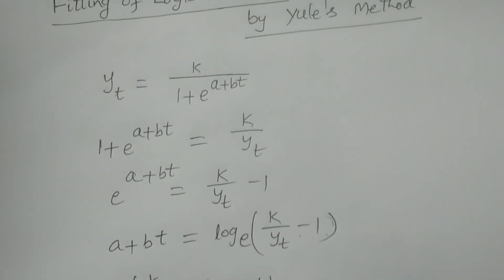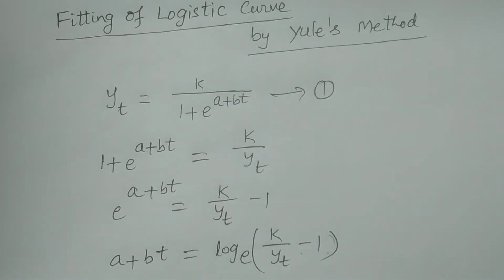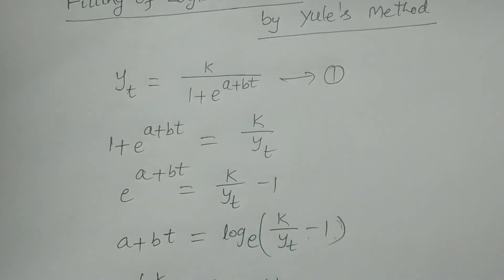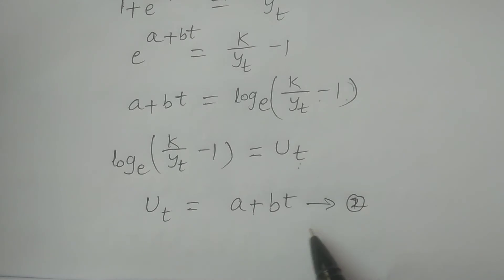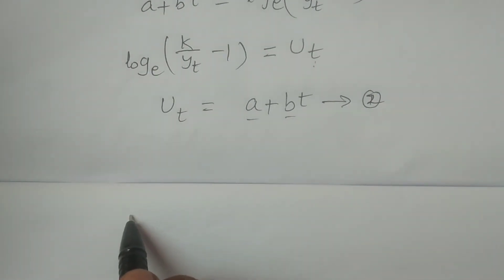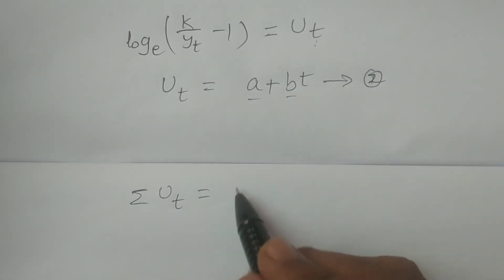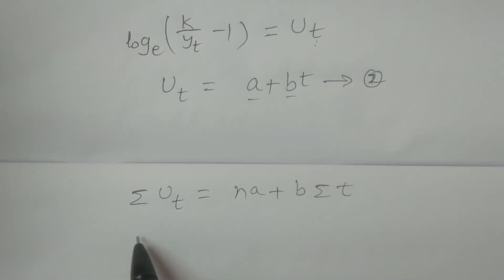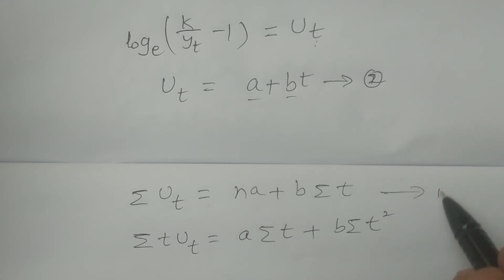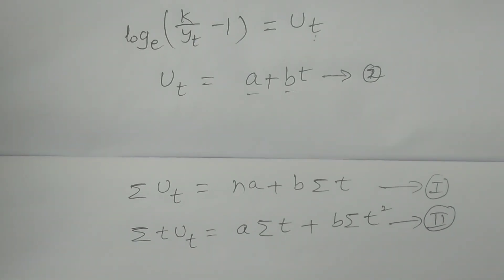The first equation is the logistic curve: Y_t = k divided by 1 plus e to the power (a + bt). The second result is u_t = a + bt, which is a straight line. By the principle of least squares, we can obtain the parameters a and b using the normal equations. The two normal equations are: summation of u_t equals Na plus b times summation of t, and summation of t·u_t equals a times summation of t plus b times summation of t squared. By solving these two normal equations, we can obtain the values of a and b.